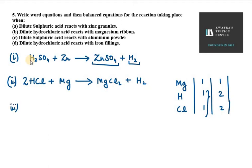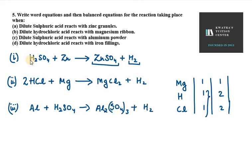The third reaction is sulfuric acid reacting with aluminum powder. We have aluminum plus H₂SO₄. The resultant is aluminum sulfate, Al₂(SO₄)₃, plus H₂. Now this equation is not balanced. Looking at aluminum: we have 2 aluminum atoms on the right side, so we place 2 on the left side as well. That part is now balanced.